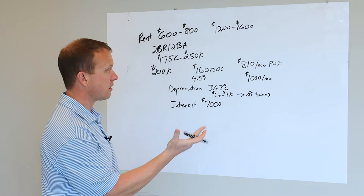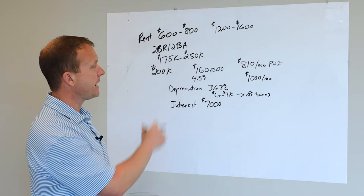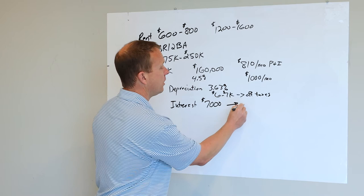So of your $810 a month or your $1,000 a month payment with PITI, principal interest tax and insurance, your principal interest of that $800 per month, about $7,000 per year is going to be, especially the first year, and it's going to decrease each year thereafter. But it's going to be in interest.